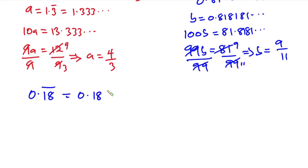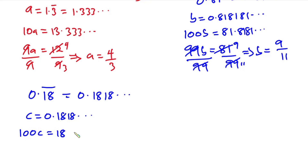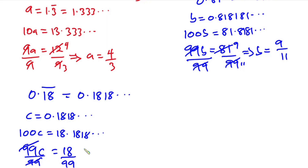We also have 0.1̄8̄, which is the same as 0.1818... Let c = 0.1818... Multiplying both sides by 100 gives 100c = 18.1818... Subtracting the first equation from the second gives 99c = 18. Dividing each side by 99, c = 18/99 = 2/11.